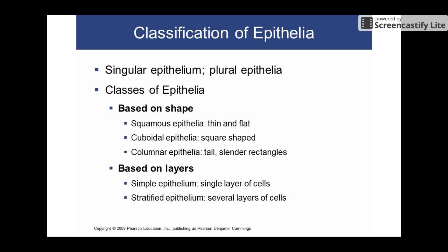So epithelials are usually named based upon two things: shape and number of layers. For shape, we have three big shapes: squamous, cuboidal, and columnar. Squamous means they're thin and flat, cuboidal are cube-shaped, and columnar — they look like columns. For layers, if it's a single layer of cells it's referred to as simple, and if it's multiple layers it's stratified — meaning layered, similar to how you've seen strata throughout science.